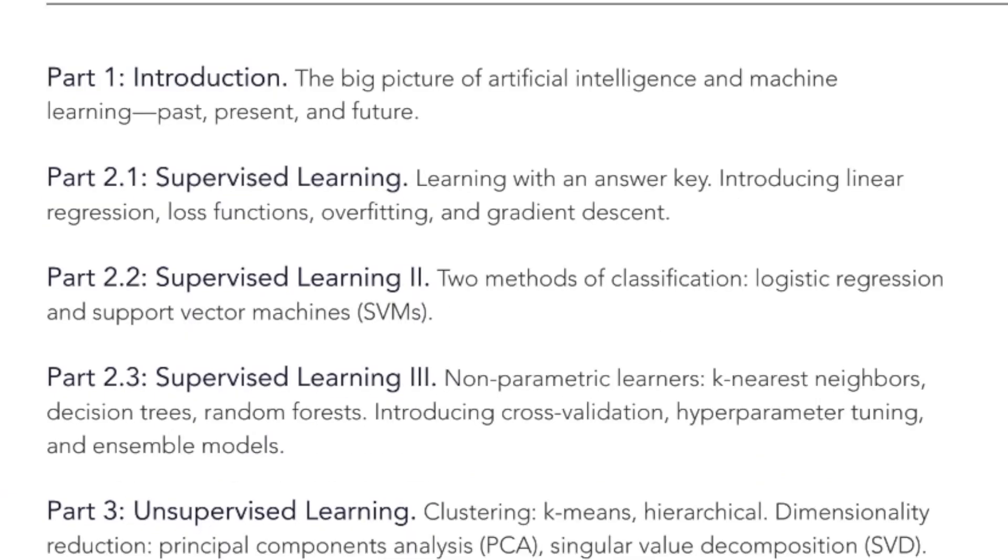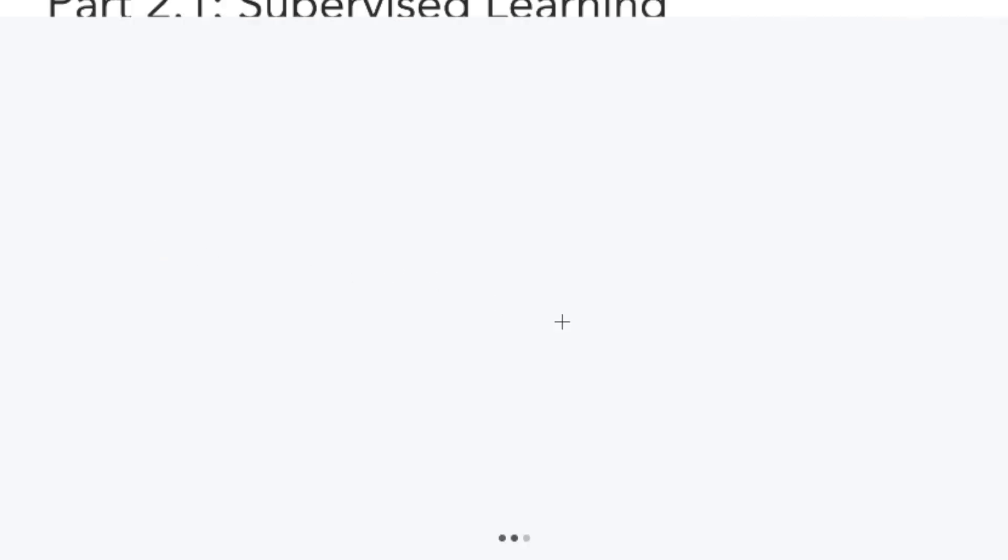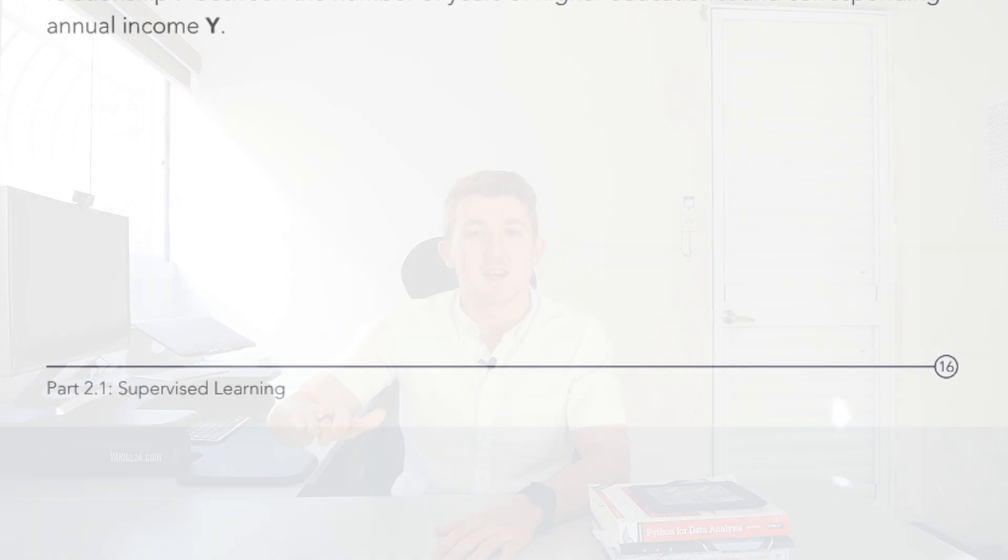Number one: Machine Learning for Humans by Vishal Maini and Samir Sabri. Machine learning is broad — there are algorithms, data, supervised learning, unsupervised learning, deep learning, and all different ways to work with them. Somehow Vishal and Samir have managed to compile a beautiful collection of explanations on all the main topics in machine learning — supervised learning, unsupervised learning, reinforcement learning, deep learning, neural networks — all within 96 pages. You can read it online for free.